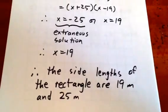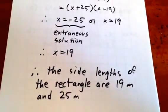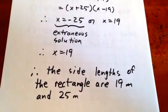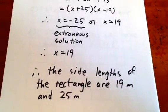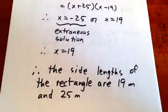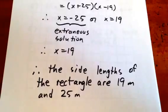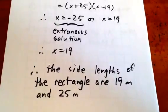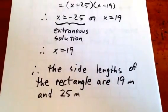So, we have a rectangle with side lengths of 19 and 25 meters and if we want, we can go back and ask ourselves if such a rectangle would, in fact, have an area of 475. We see that 19 times 25 does equal 475, so we reached the right answer. Thank you.